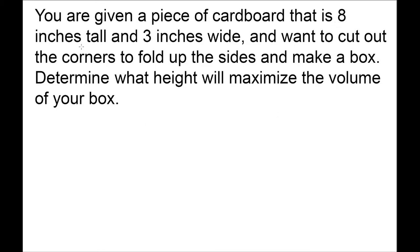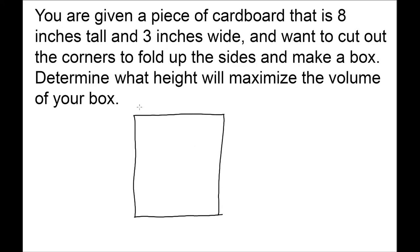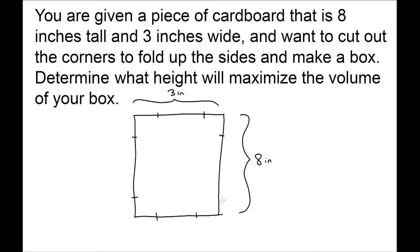So we're given a piece of cardboard that's eight inches tall and three inches wide, and we want to cut out the corners to make a box. We're going to have this side as the shorter side — three inches wide — and this side is going to be our eight inch side. We're going to make a cut on each corner, and each cut is going to have a constant length — we're going to call that x.